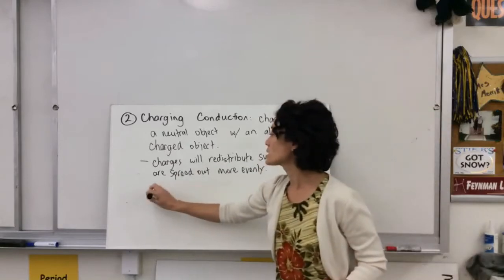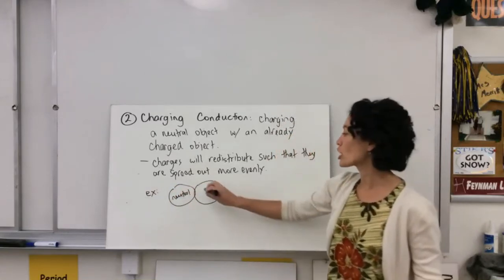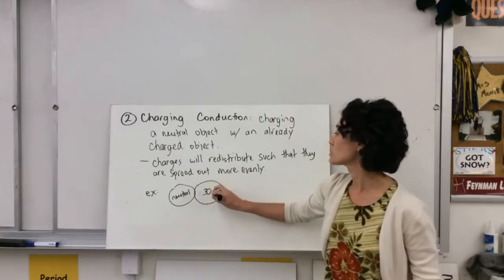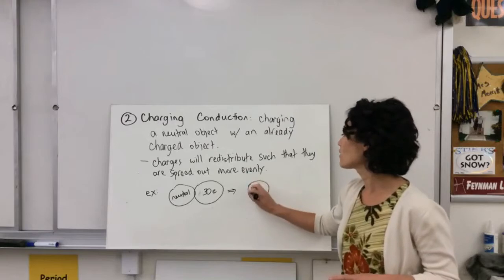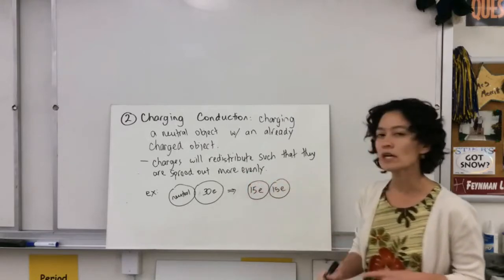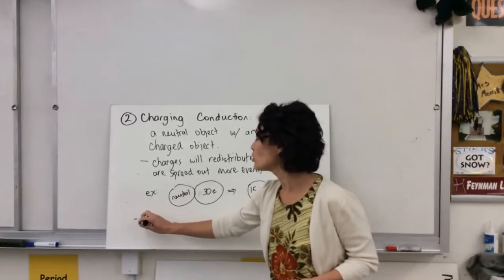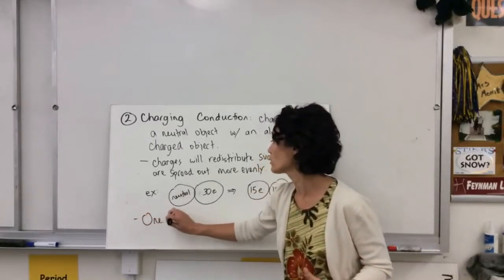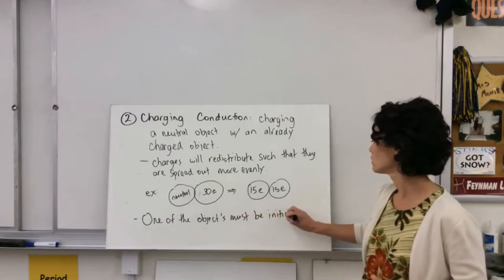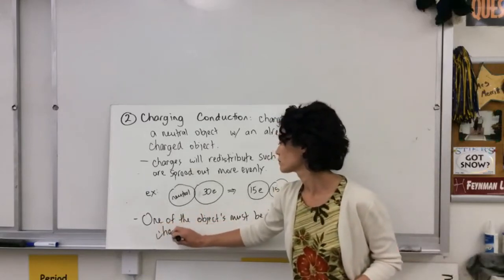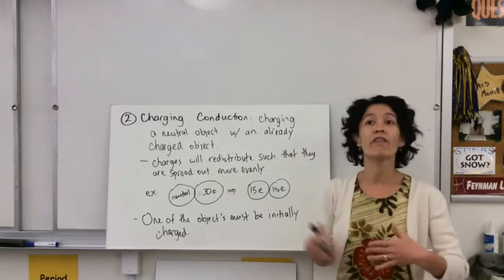For example, let's say I have something that is neutral and I touch it with something that has 30 excess electrons. If I touch it with something neutral, the charges are going to redistribute and I'm going to have like 15 electrons on each, because electrons don't like being near each other and if they get the chance to spread out, they're going to spread out. The key with charging by conduction is that you must already have a charged object — you can't have conduction without some other method of charging first, usually charging by friction.